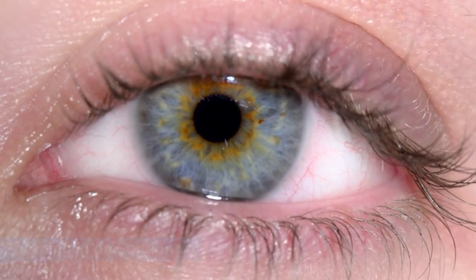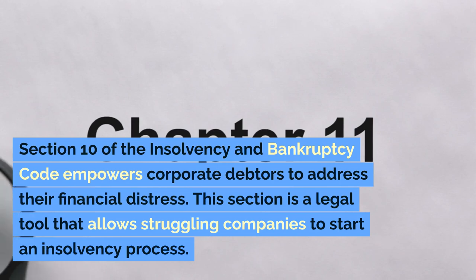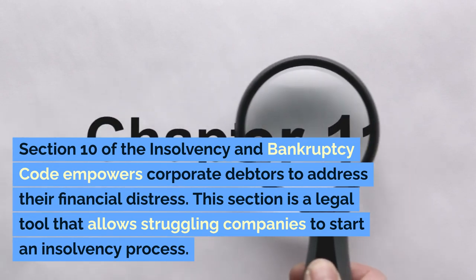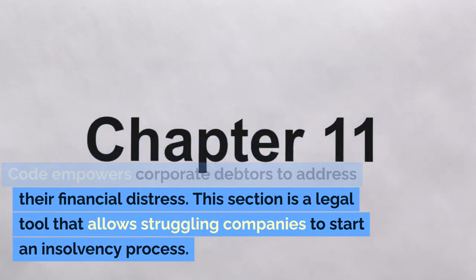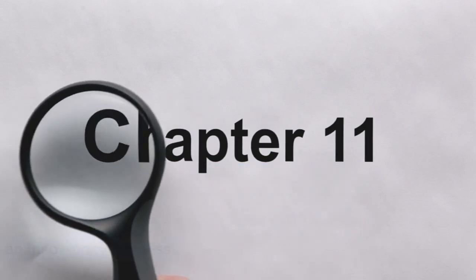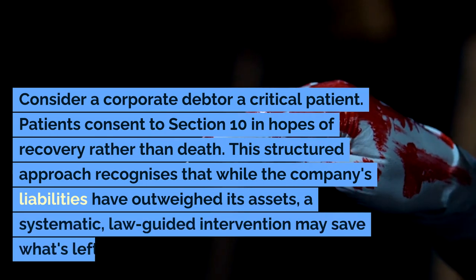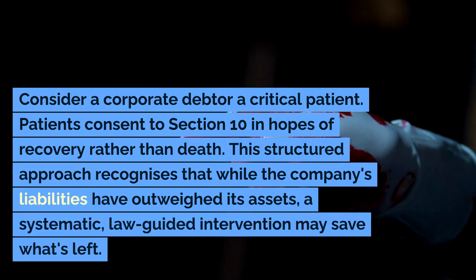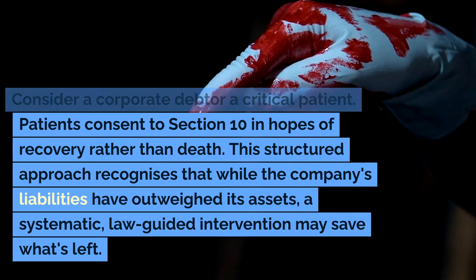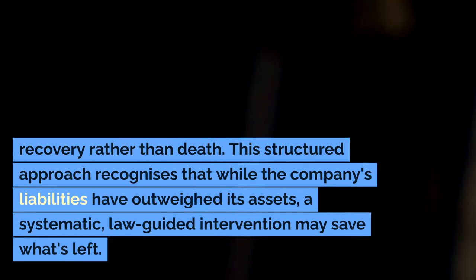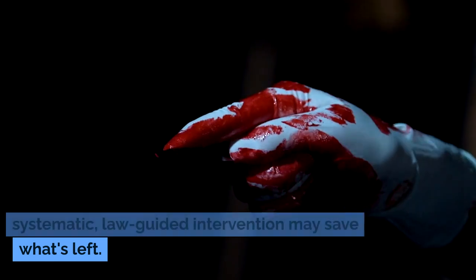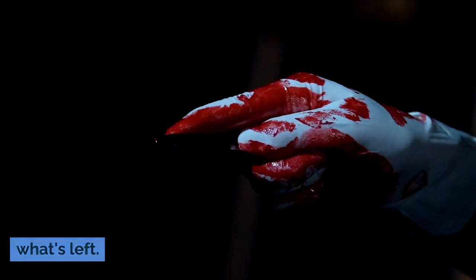Section 10 of the Insolvency and Bankruptcy Code empowers corporate debtors to address their financial distress. This section is a legal tool that allows struggling companies to start an insolvency process. Consider a corporate debtor as a critical patient — they consent to Section 10 in hopes of recovery rather than dissolution. This structured approach recognizes that while the company's liabilities have outweighed its assets, a systematic, law-guided intervention may save what's left.